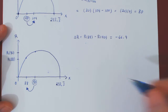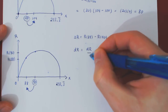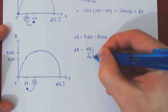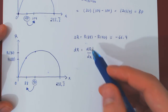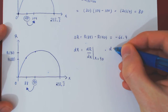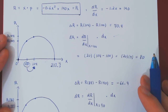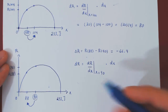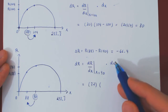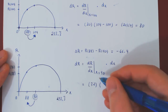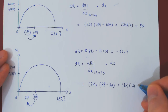Now let's use differentials to estimate the change in revenue. dR equals dR/dx evaluated at the initial value of x — here at 90 — times dx. Recall that dR/dx equals negative 1.2x plus 140. Replacing x by 90 gives a value of 32. The change in x is 88 minus 90 equals negative 2. So dR equals 32 times negative 2, which is negative 64.